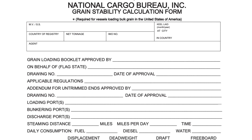The form is completed by the chief officer and countersigned by the master. The form is then signed by the NCB surveyor after checking all the details. The NCB surveyor checks for the accuracy of the information by comparing it with values obtained from the approved loadicator reports.